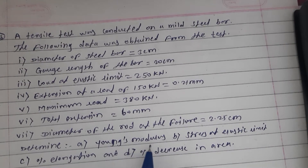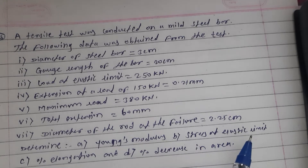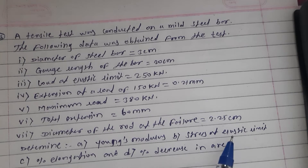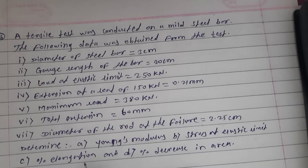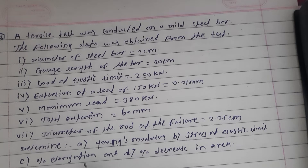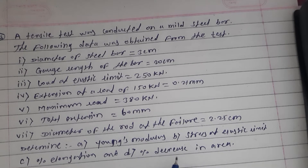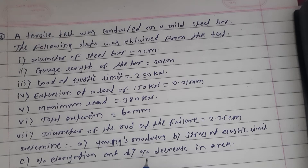We want to determine: Young's modulus, which is the modulus of elasticity — we want to calculate the E value; stress at elastic limit — we want to calculate sigma at elastic limit; percentage elongation — how much percent the bar elongates when applying the maximum load; and percentage decrease in area — how much percent the area decreases. We will see one by one.